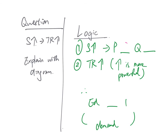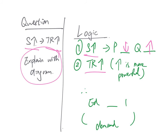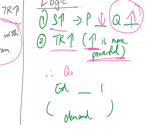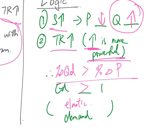Let's look at an example. The question states that there is a supply increase and the result is a total revenue increase, asking us to explain with a diagram. Start with the cause: supply increases, so price drops and quantity increases. Since total revenue increases, the increasing factor — quantity — is more powerful. This means the percentage change in quantity demanded is greater than the percentage change in price, which is the definition of elastic demand.